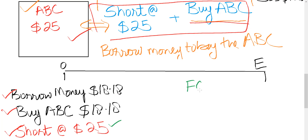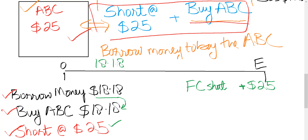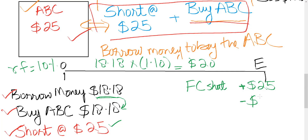At expiry, the investor will execute this forward contract. On the short position, the investor will sell the asset for $25, receiving $25 cash inflow by selling the ABC share to the long. To complete this strategy, the investor must repay the lender. The investor borrowed $18.18 at the risk-free rate of 10%, so after one year the investor must return $20 to the lender, which includes the interest payment.